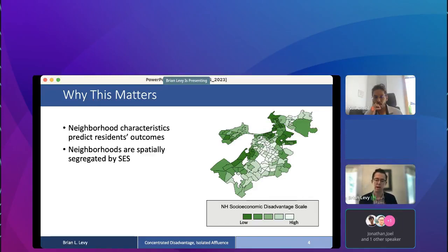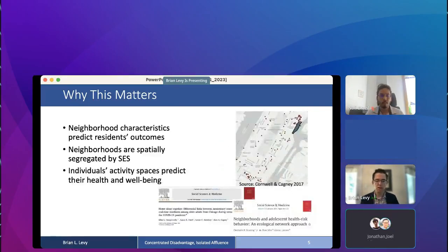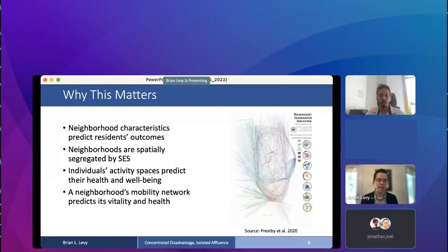But we can go further thanks to some recent data innovations. We know that individuals don't exist solely in their neighborhoods or even in the immediately proximal spaces. They travel about their cities and communities in the course of their daily lives. So neighborhoods are not really islands as traditional models of neighborhood effects might assume. They're instead structurally connected based on the everyday mobility flows between them. At the individual level, we know that people's activity spaces can predict their health and well-being. At the neighborhood level, these structural connections between neighborhoods are important for a range of measures of vitality and residents' well-being. The work I'm presenting today seeks to measure these neighborhood networks and assess their implications for inequality.